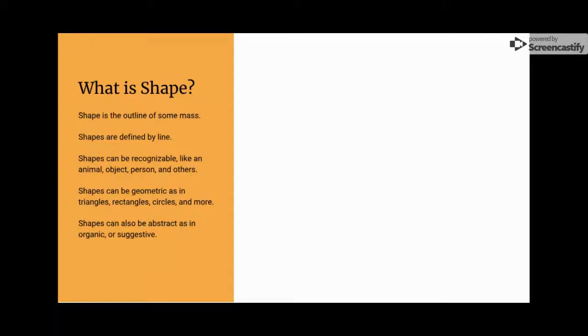It's usually defined by a line, and shapes can come in different types of forms. Shapes can be recognizable, like an animal, an object, a person, or some other type of thing.